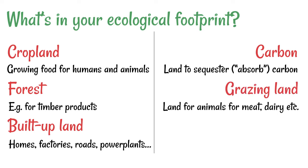Next would be grazing land — that's the land for the animals whose products they use. So animals that they eat as meat, as dairy, eggs that are produced, leather for their shoes, this kind of thing.